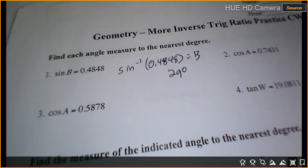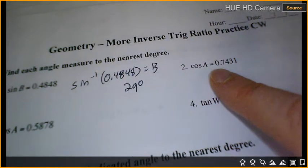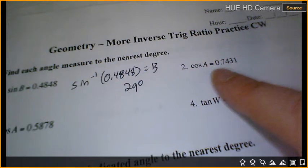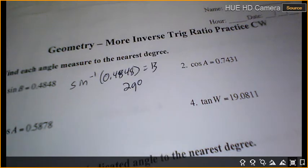Okay, let's try number 2. So what am I going to choose for 2? How am I going to find out what A is? What do I put in there? Yep, cosine of negative 1. 0.7431, push enter, and what do I get? 42 degrees.